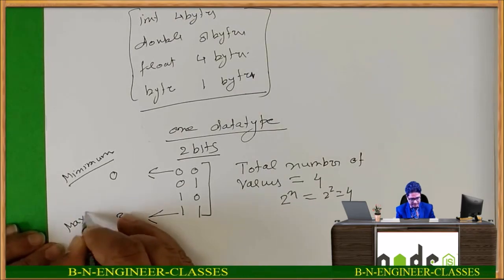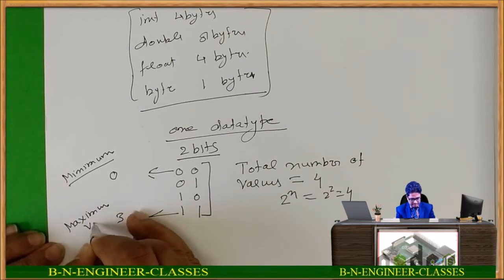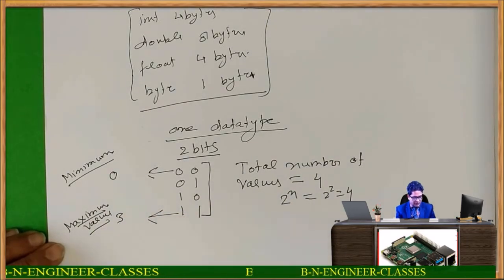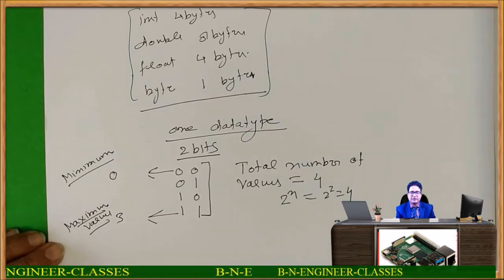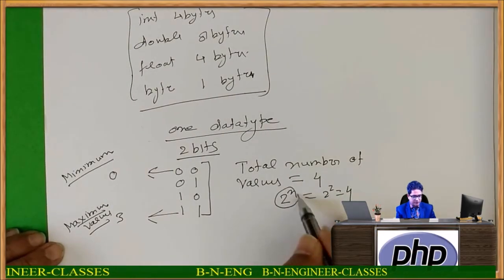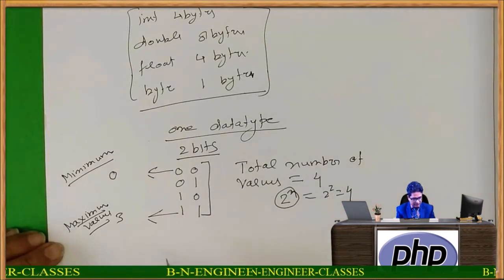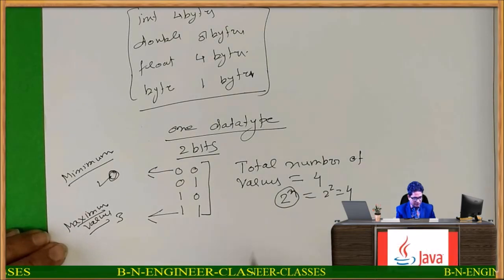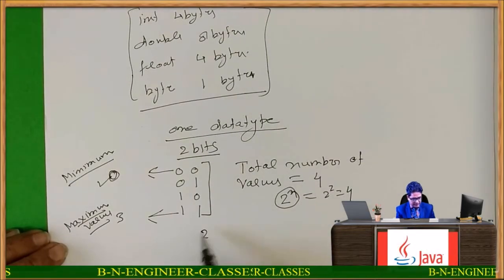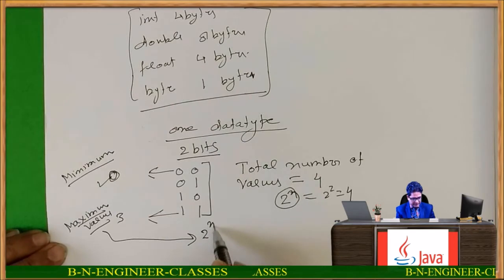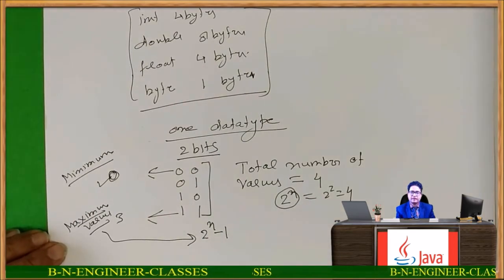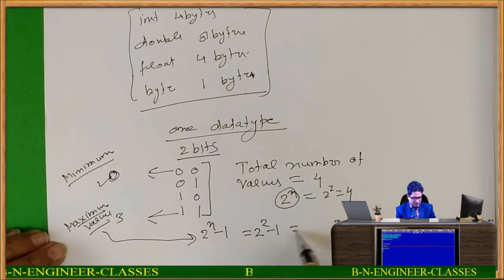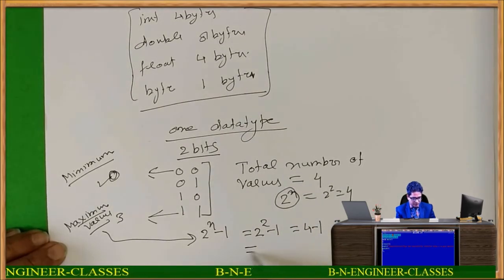The maximum value is 3 and the minimum value is 0. Now, in which way can I find out the minimum and maximum value by formula? The minimum value will be 0. The maximum value will be equal to 2 to the power n minus 1. So it will be 2 to the power 2 minus 1, equal to 4 minus 1, equal to 3.